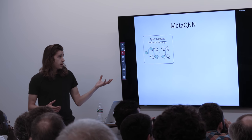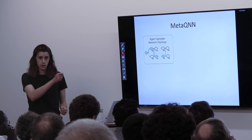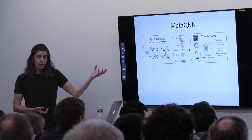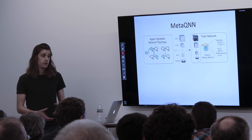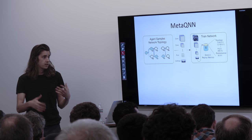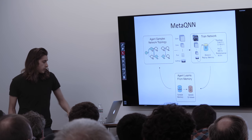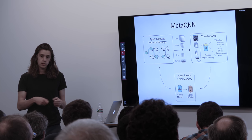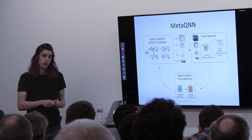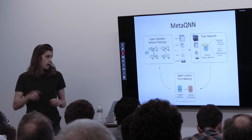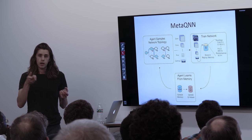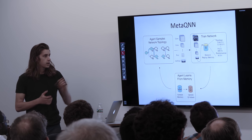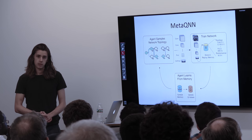To summarize: the agent samples network topologies by going through the state-action graph, which manifest as actual neural networks. Once manifested, the neural network is trained on the task — say, image classification — and its performance is stored in the agent's memory. Periodically, we go through memory, select some networks, and update the Q-values of the trajectories those networks represent. The algorithm is: sample networks, train them, update Q-values based on the performance those networks achieved.